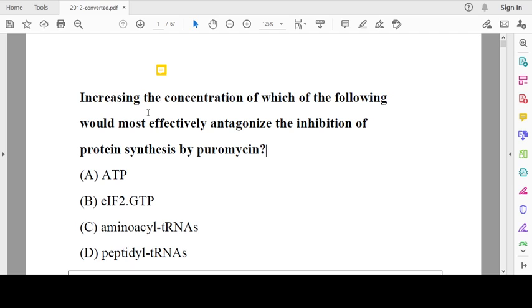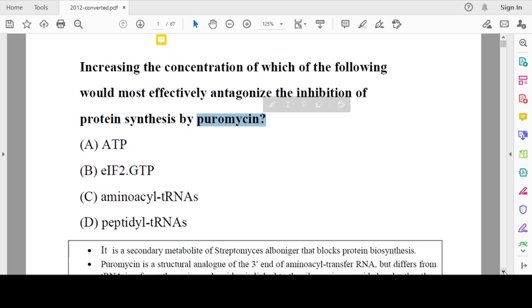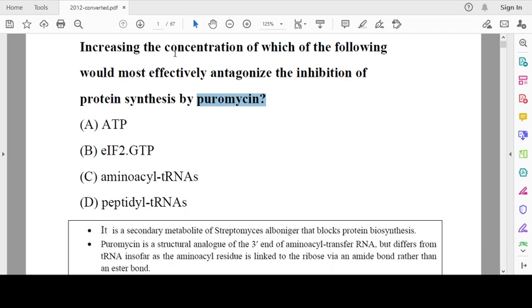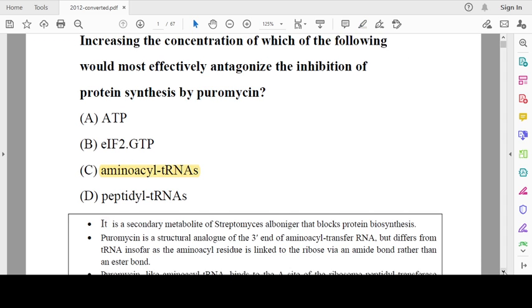First question: increasing the concentration of which of the following would most effectively antagonize the inhibition of proteins in the cells by puromycin? Every year at least one question will be asked from this puromycin, and they are saying increasing the concentration of which of the following. Puromycin acts on aminoacyl tRNA, so the correct option is aminoacyl tRNA.